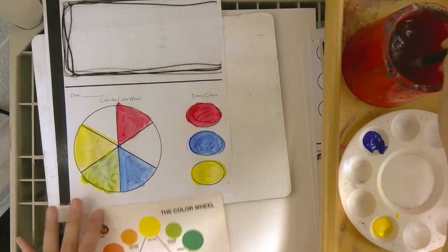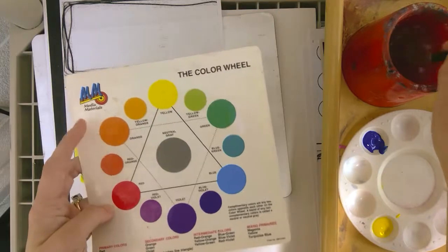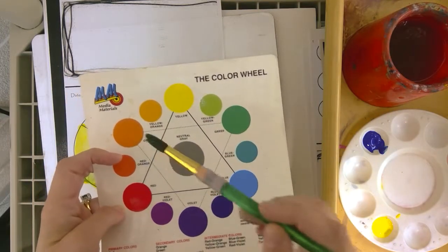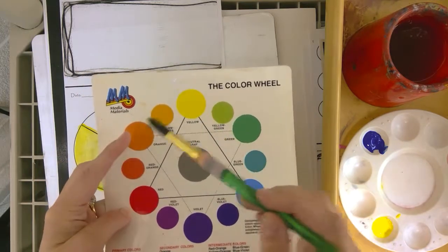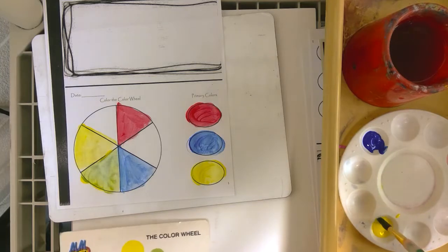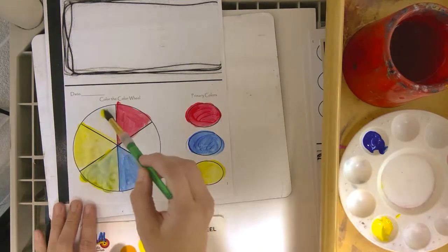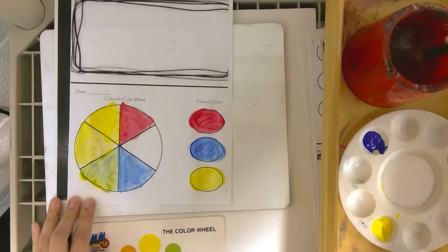Rinse my brush off. Can anybody guess what two colors make orange? That's right. Yellow and red make orange because they're on either side of orange. So those are the two colors that create it. So again, I'm going to take my yellow in between yellow and red. I'm going to put yellow. I'm going to rinse my brush off.